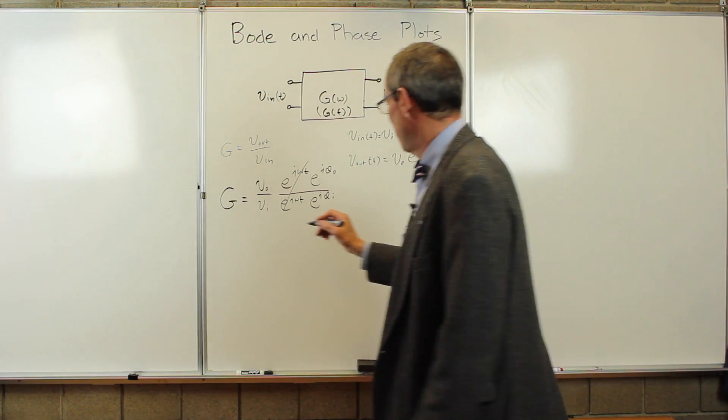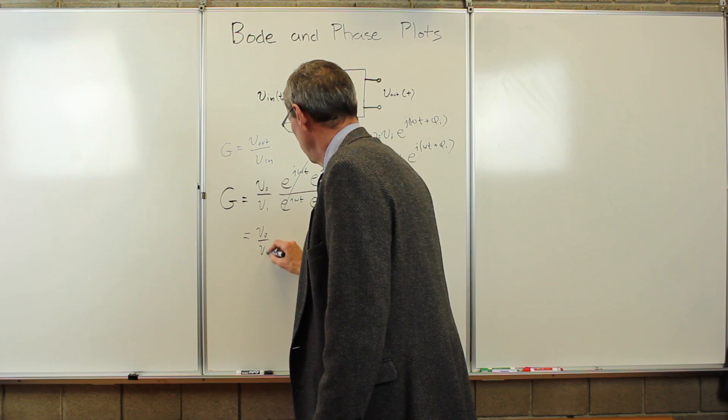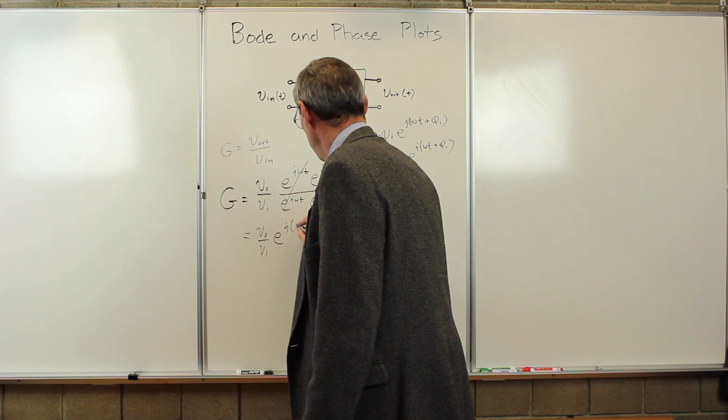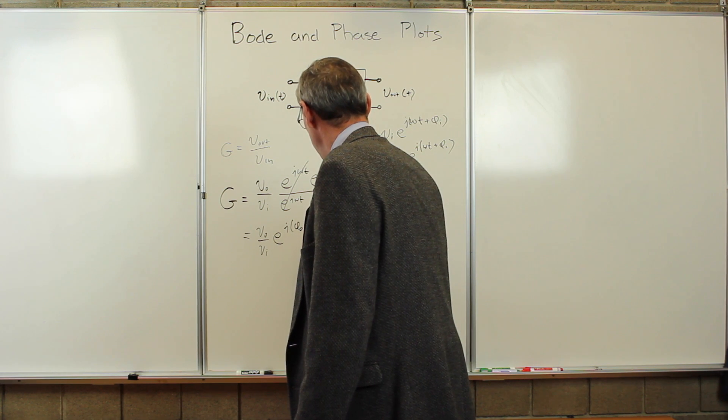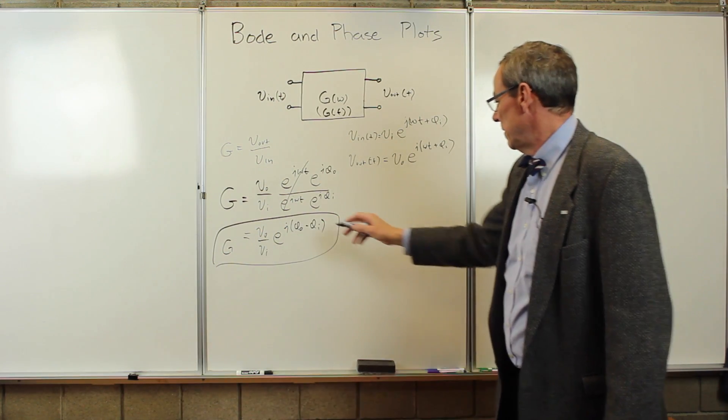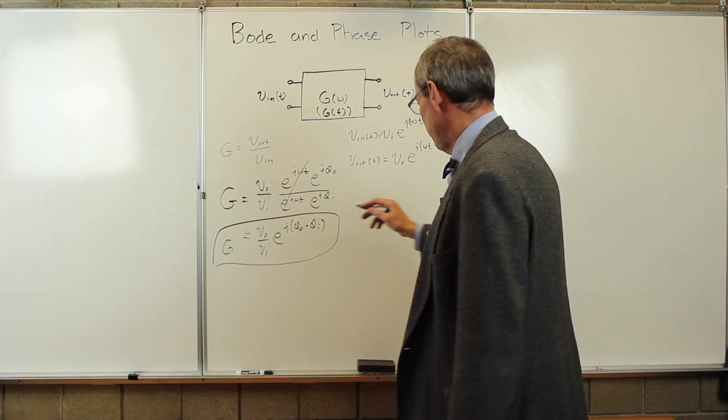Time dependence goes away, as we expect, and we just simply get V_out over V_in times e to the j phi_out minus phi_in. So that's the gain as a function of input voltages and their phases here.